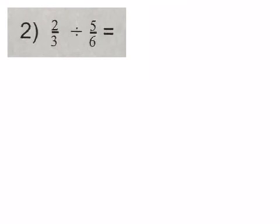Let's try another problem. Step one is to give common denominators. I have a three and a six as my denominators, so I can change the three into a six by multiplying by two on top and bottom. Now I've got four sixths divided by five sixths.